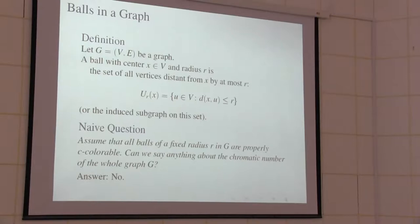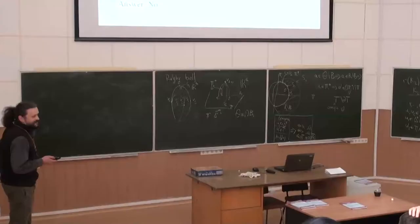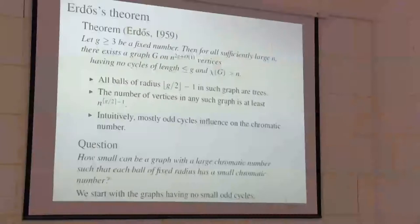The first question, which would be quite naive, is to ask: if we know that the chromatic numbers of all balls of fixed radius r are bounded, can we bound the global chromatic number of the whole graph? Since this question is too general, the answer is also too general — no such bound exists, and this is by well-known reasons.